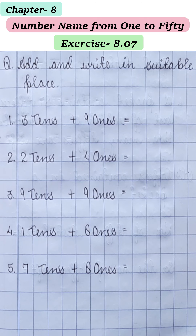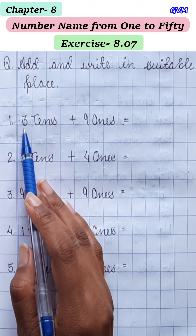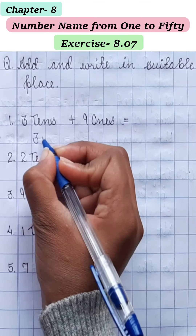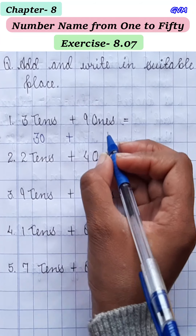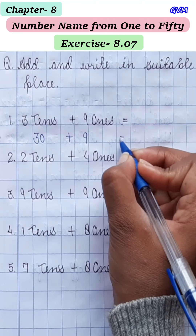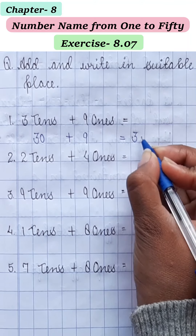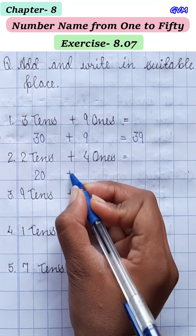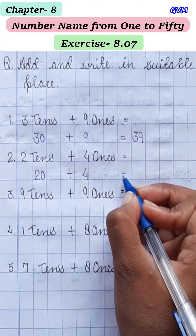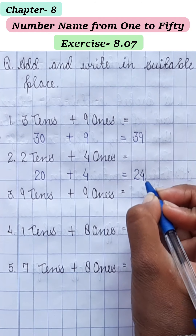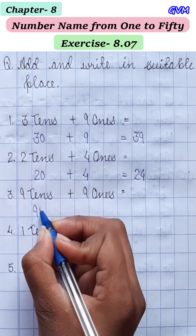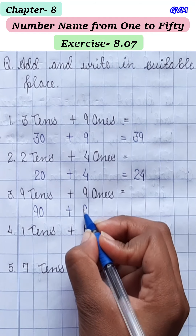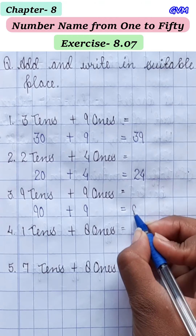Now we have exercise 8.07 and the question is: add and write in suitable place। आपको add करना है और फिर suitable place पर लिखना है। First: 3 10s means 30, plus 9 1s means 9, is equal to 39। Second: 2 10s means 20, plus 4 1s means 4, is equal to 24। Third: 9 10s means 90, plus 9 1s means 9, is equal to 99।